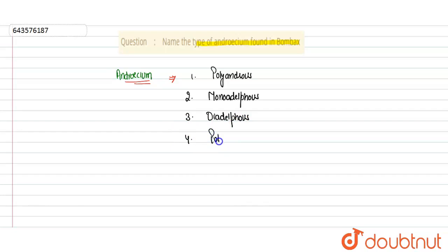polyadelphous androecium. In this case, filaments of anthers are fused into more than two groups.